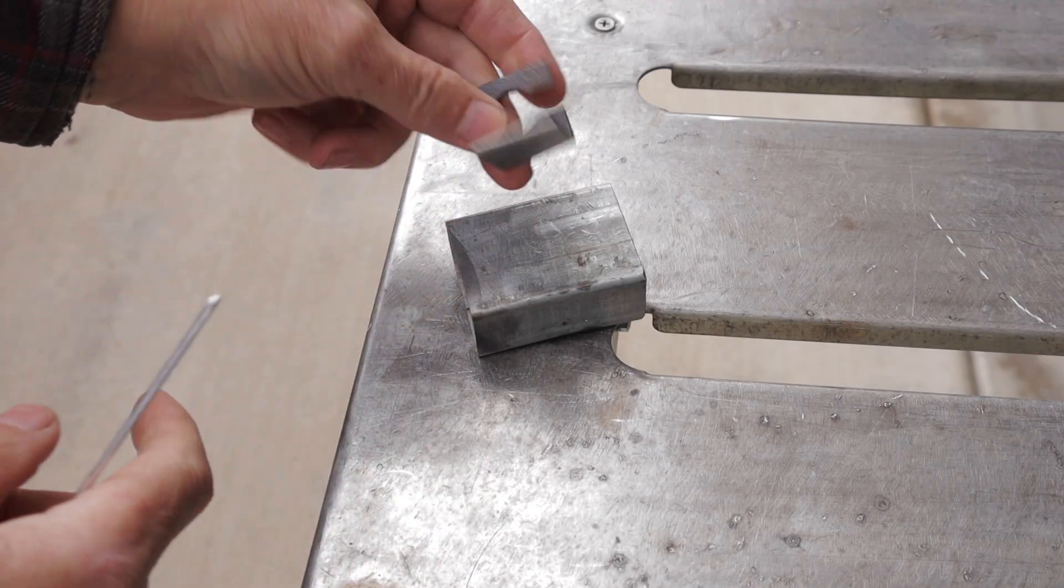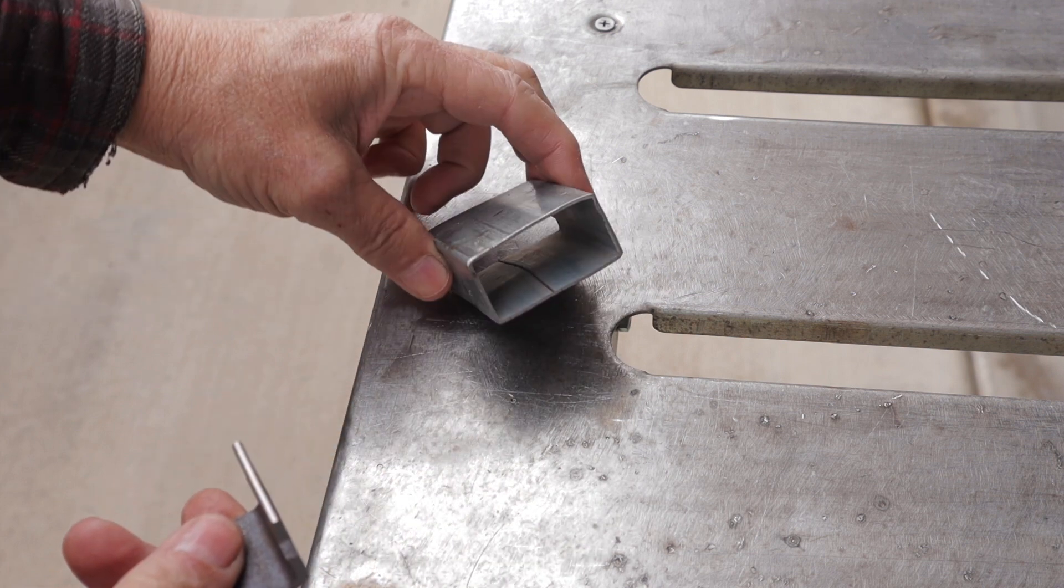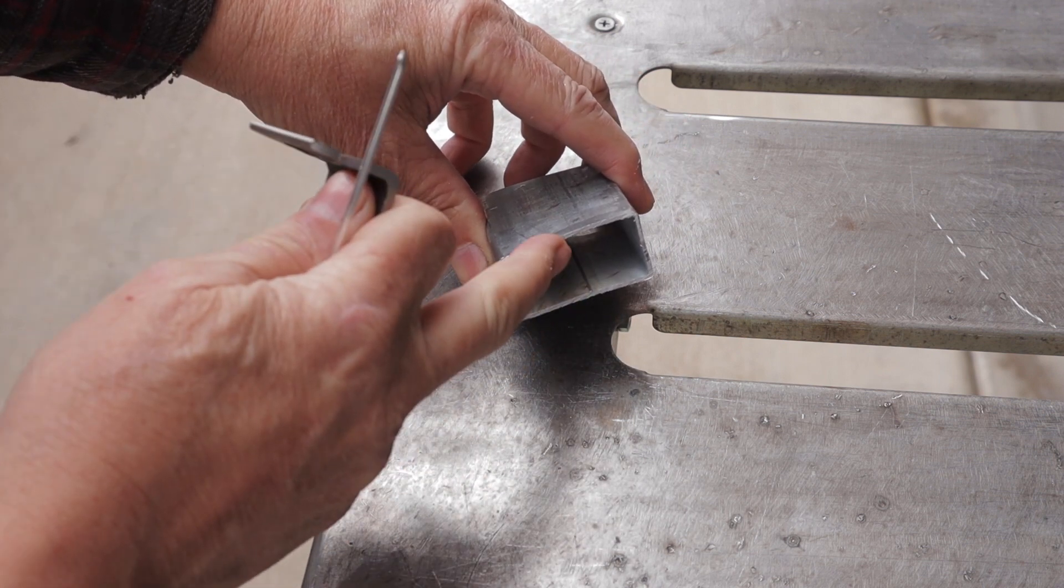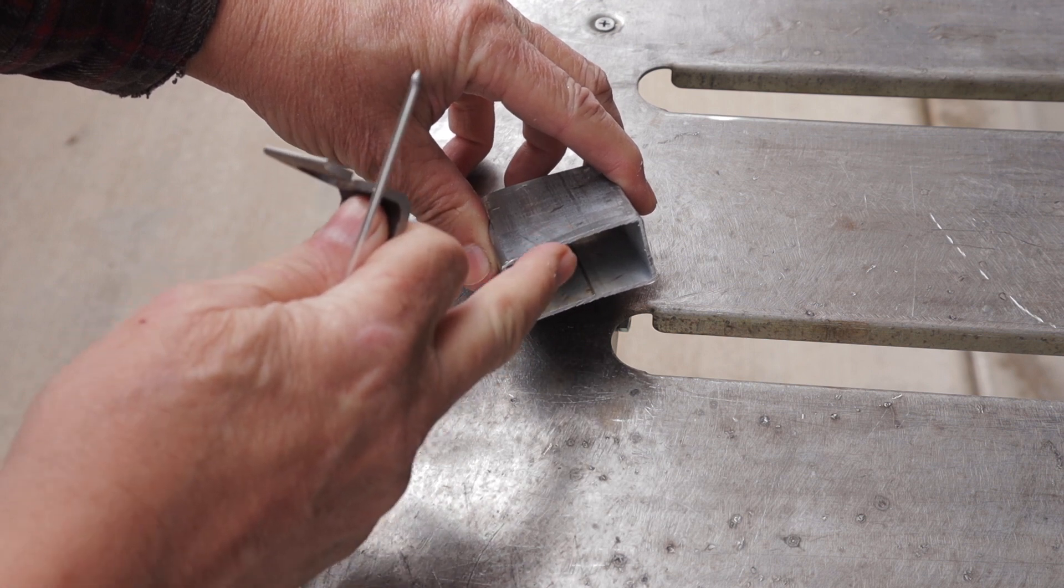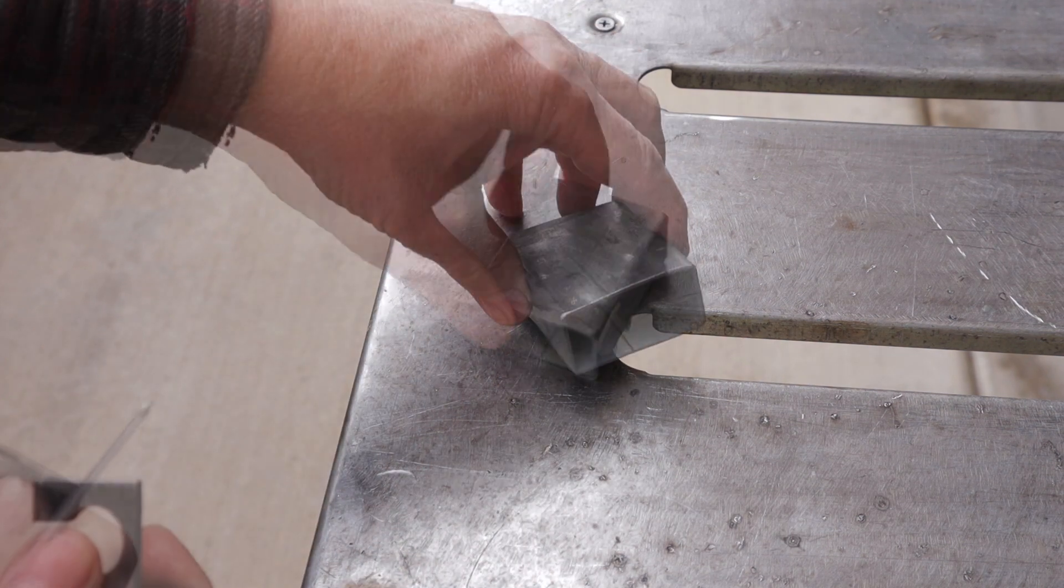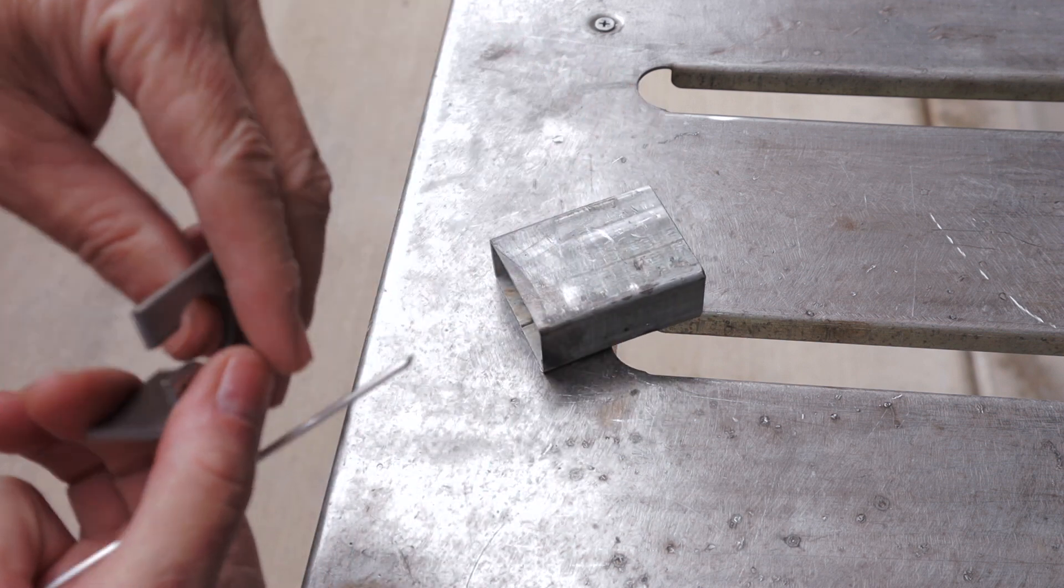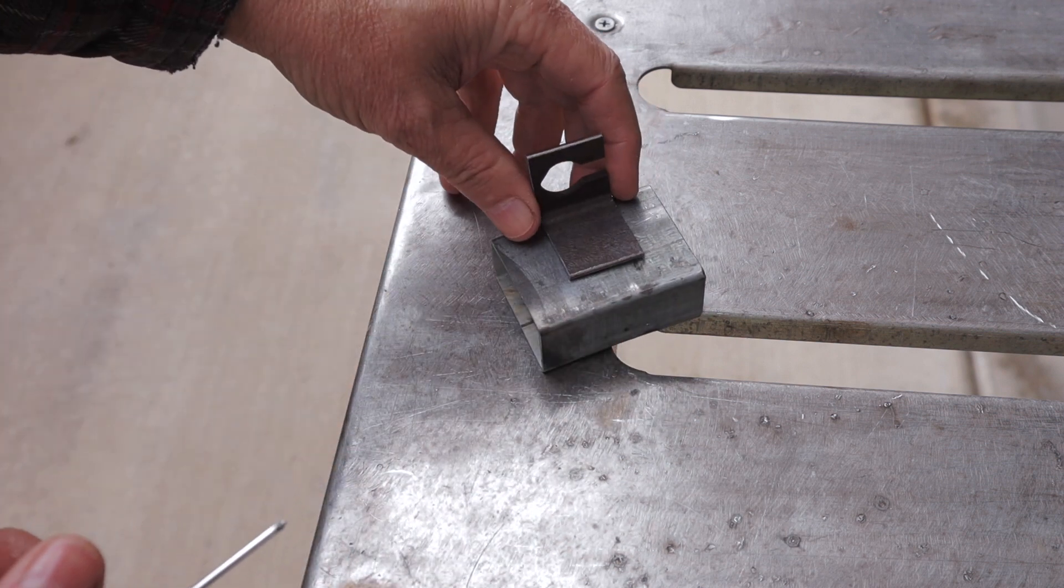I want to weld one-eighth inch thick steel brackets onto this thin rectangular tubing, which is one millimeter, 1.3 millimeter truly, about 18 gauge maybe 16. And I'm going to apply some of the same principles that I was explaining in a previous video.